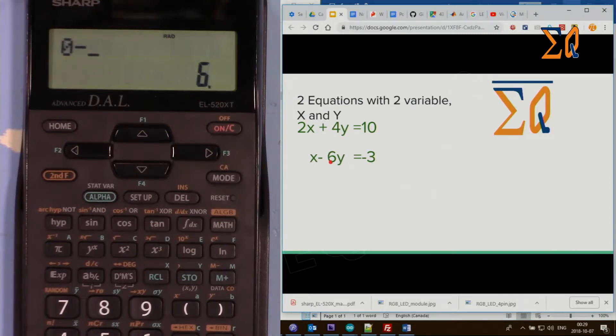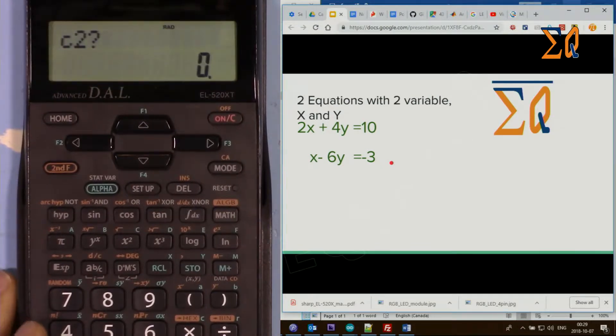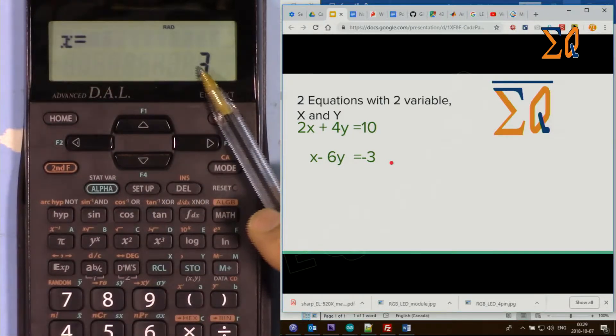Minus 6 equal, and then for c I'm using the regular minus, minus 3, and then equal. Now it says x is 3.